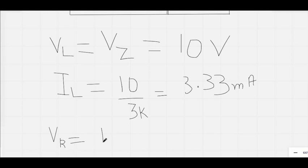The new VR would be 16 minus VL. The VL is a constant voltage, the VL is stable now. It will remain 10 volts as long as the value of V is more than the breakdown voltage. So it is 6 volts.